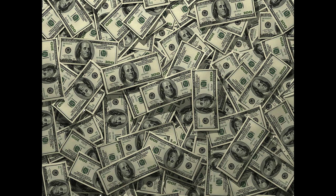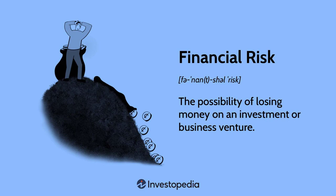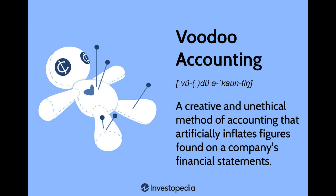Greed and Corruption: Greed and corruption were also contributing factors to the Great Recession. Many financial institutions were focused on making profits at any cost, even if it meant taking on excessive risk. This led to unethical practices such as predatory lending, insider trading, and market manipulation.